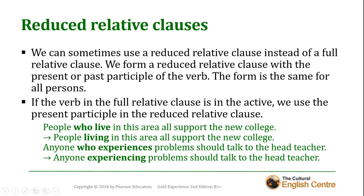If the verb in the full relative clause is in the active, we use the present participle in the reduced relative clause. For example: 'People who live in this area all support the new college' becomes 'People living in this area all support the new college.' Similarly, 'Anyone who experiences problems should talk to the head teacher' becomes 'Anyone experiencing problems should talk to the head teacher.'